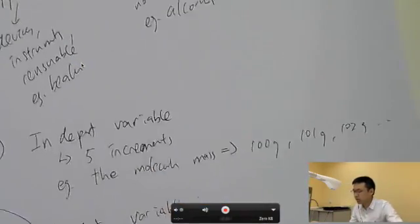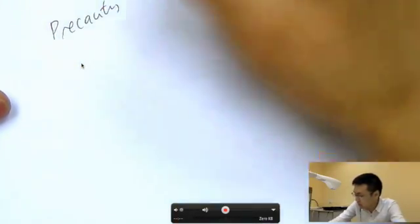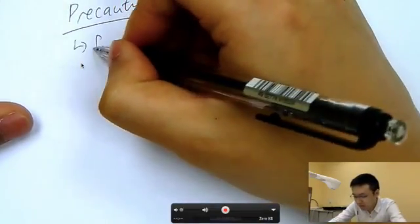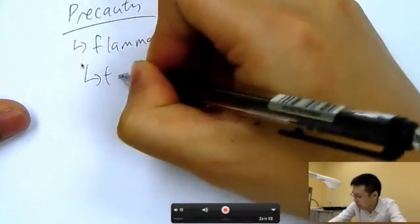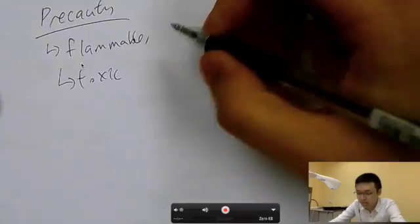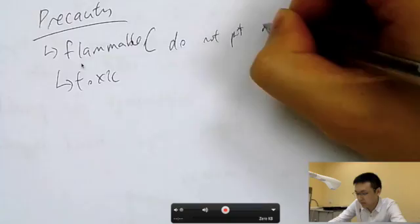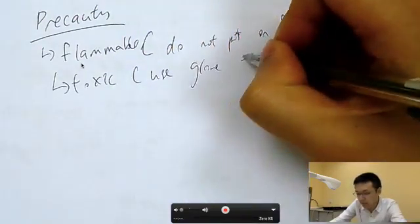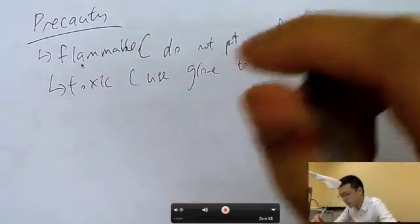One more section a lot of students forget to add is precautions. List what things you need to be cautious about. For example, flammables and toxic chemicals. For flammable ingredients, you can say 'do not place near fire.' For toxic chemicals, say 'use gloves to handle' — something like that.